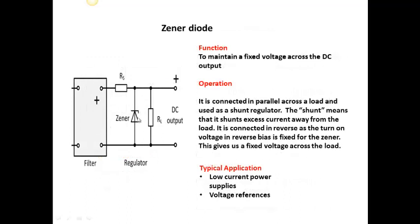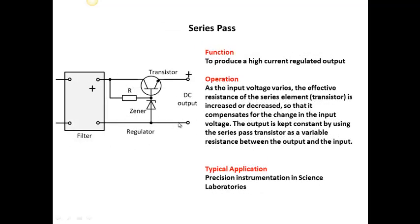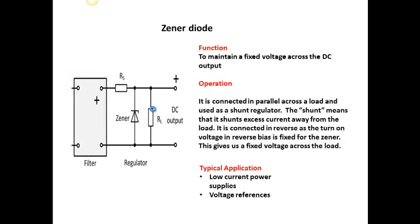The zener diode has a reverse bias voltage that is fixed by the manufacturer. You can see the zener diode there — it's in reverse bias across the supply. If this is a 5.6V zener, this output voltage will always be 5.6V, independent of what voltage we put in, as long as we feed it more than 5.6V. It's also known as a shunt — it shunts away the excess current, so when too much current is drawn, the zener will take away the excess current.